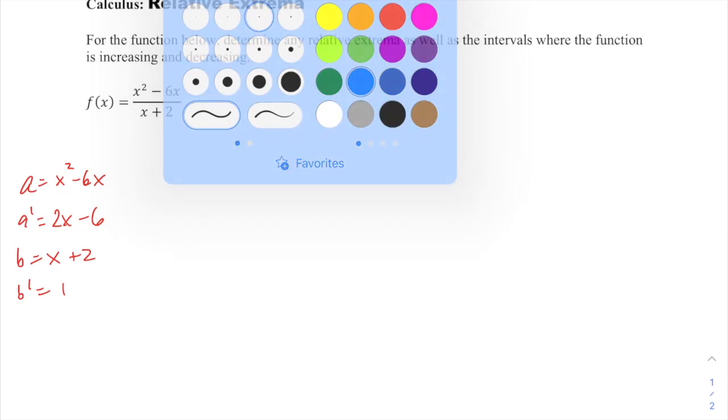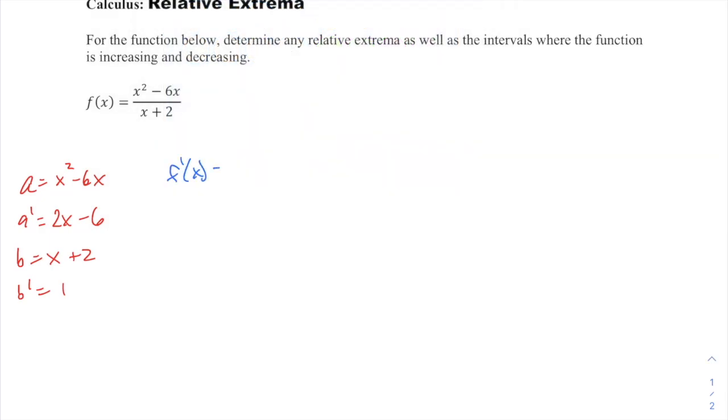So our f prime of x is big fraction, the denominator, x plus 2 squared, and up top it will be 2x minus 6 times x plus 2, the product of those inners, inner expressions, minus x squared minus 6x times 1.